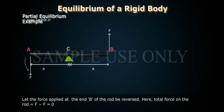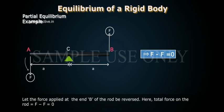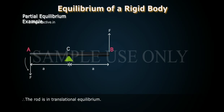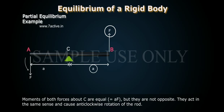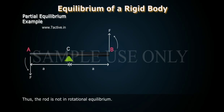Now let the force applied at end B of the rod be reversed. Here, the total force on the rod = F − F = 0. Therefore, the rod is in translational equilibrium. However, the moments of both forces about C are equal (= AF) but they are not opposite — they act in the same sense and cause anticlockwise rotation of the rod. Thus, the rod is not in rotational equilibrium.